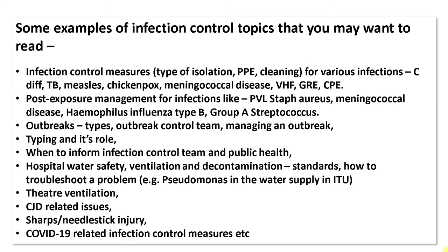Further infection control topics include: 4. Typing and its role. 5. When to inform the infection control team and public health. 6. Hospital water safety, ventilation and decontamination standards, and how to troubleshoot problems — for example, Pseudomonas in the water supply in the intensive care unit. 7. Theater ventilation. 8. CJD-related issues. 9. Sharps or needle stick injury. 10. COVID-19 related infection control measures. These are only some examples — there are many other issues which can be examined.